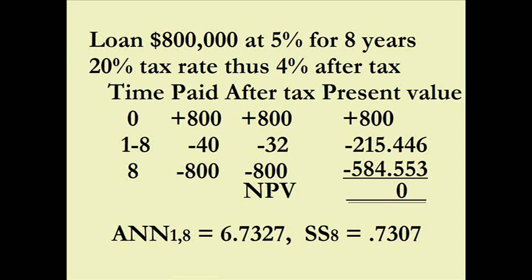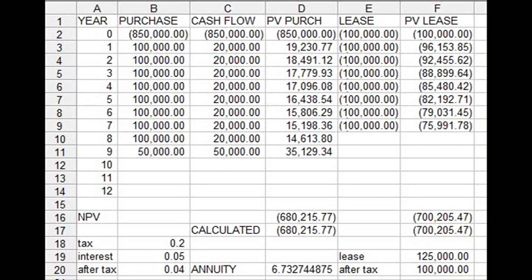Then we have to pay back the $800,000 balance, using a single-sum figure again at four percent after tax. When you calculate all the present values and add them up, the net present value is zero. That's right — the present value of any loan at its own after-tax discount rate is zero. Including it would only make things longer and result in double-counting the interest.